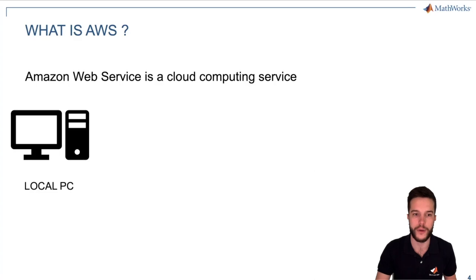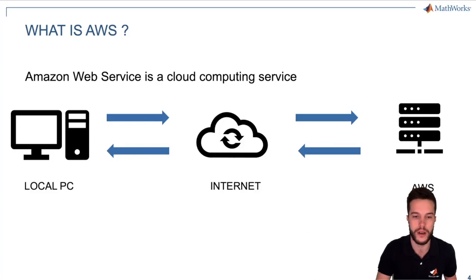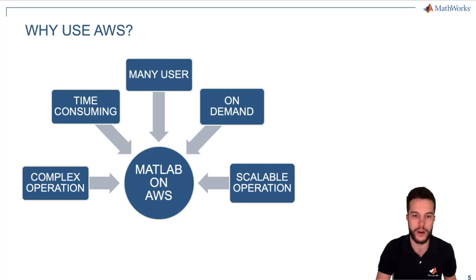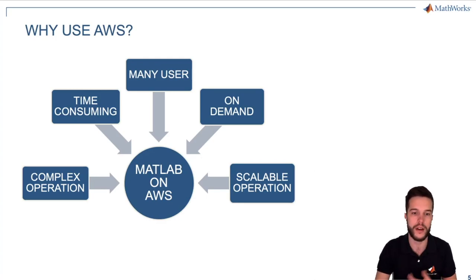Why AWS? Amazon Web Service is a cloud computing service. You have your local PC, you connect to internet, and internet makes it possible to connect to Amazon servers. This connection, in both ways, makes it possible to use the potentiality of this powerful server for our purpose. MATLAB on AWS is particularly suitable because some applications for MATLAB are very time-consuming, very complex, use a lot of memory. So for people that don't have a high-powered computer at home, or want to perform a specific calculation that requires a lot of computation, they can use this service without buying a specific machine.